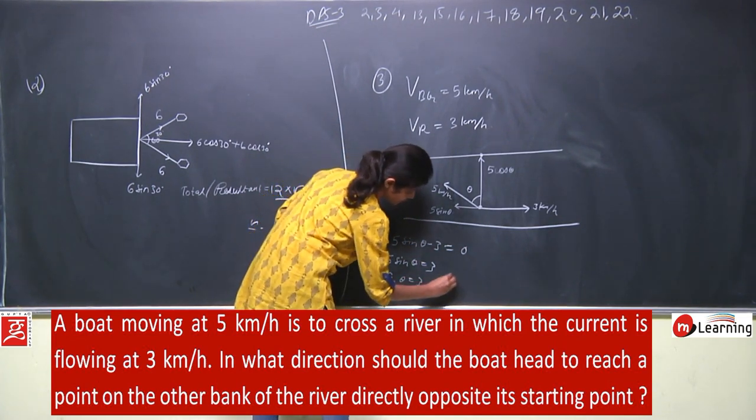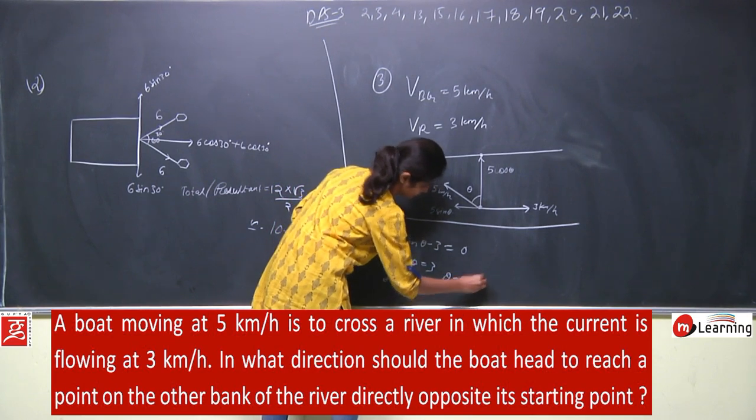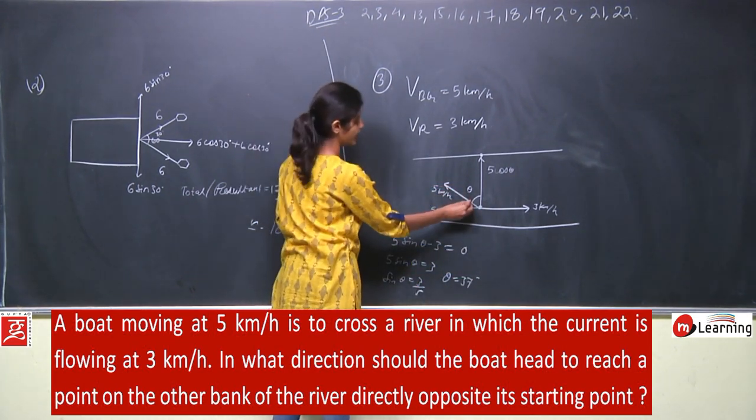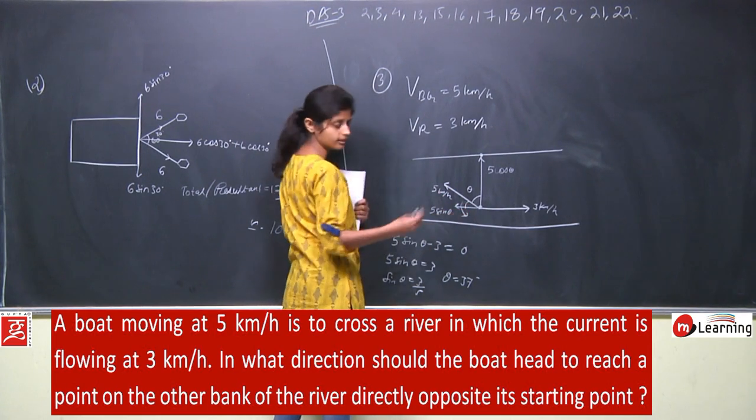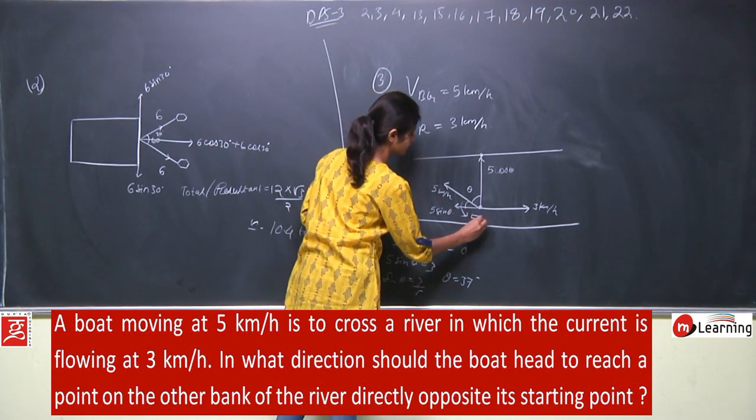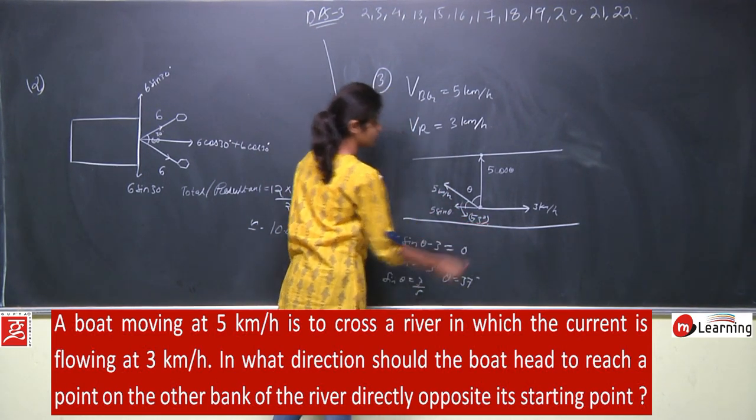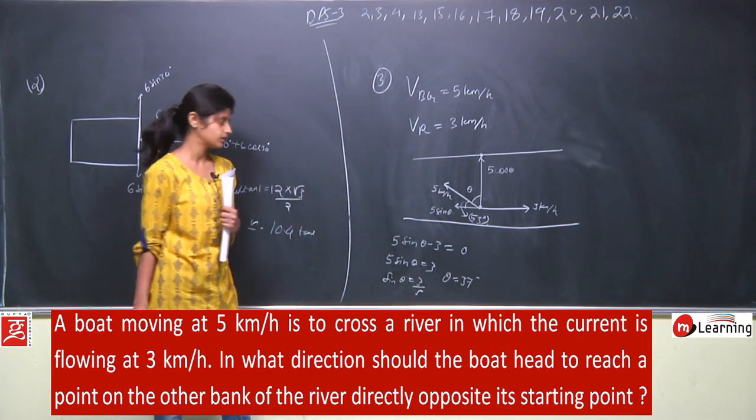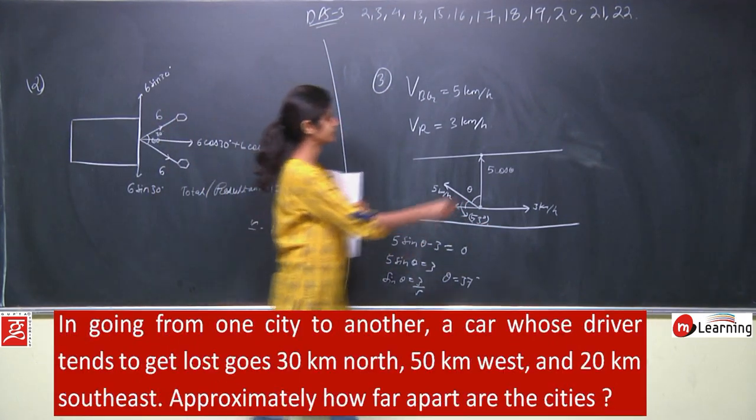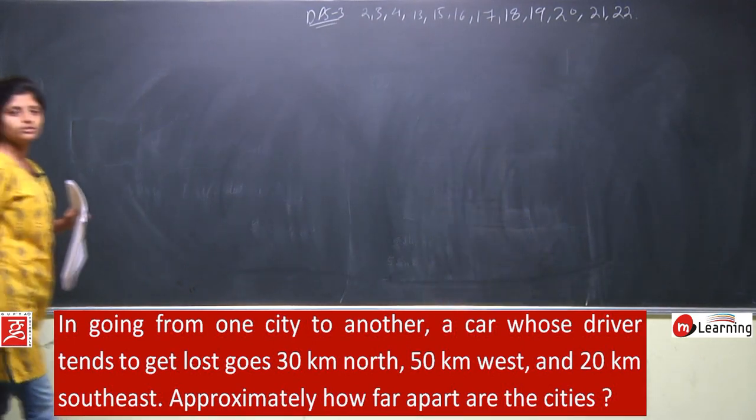Sin theta is 3 by 5, so theta will be 37 degrees. So this angle should be 37 degrees, which means this angle will be 90 minus 37 degrees, that is 53 degrees. So the answer is 53 degrees.